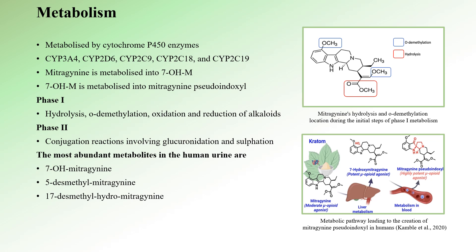In the first phase, mitragynine undergoes hydrolysis and O-demethylation of OCH3 groups, followed by oxidation and reduction. The first phase results in mostly pharmacologically inactive metabolites; however, there are two key active metabolites: 7-hydroxymitragynine and mitragynine pseudoindoxyl. In the second phase, remaining metabolites undergo conjugation reactions involving glucuronidation and sulfonation, producing water-soluble, pharmacologically inactive metabolites excreted in urine. The most abundant metabolites found in human urine include 7-hydroxymitragynine, 5-desmethylmitragynine, and 17-desmethyldihydromitragynine.